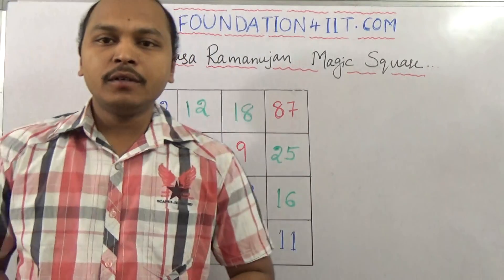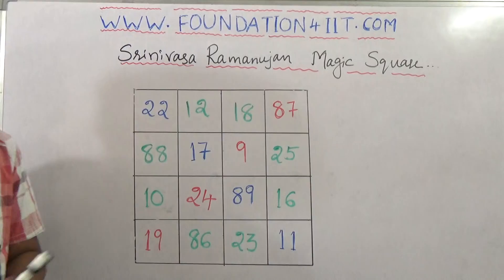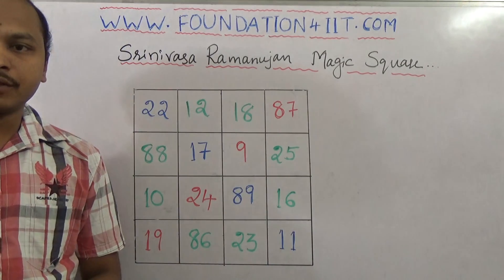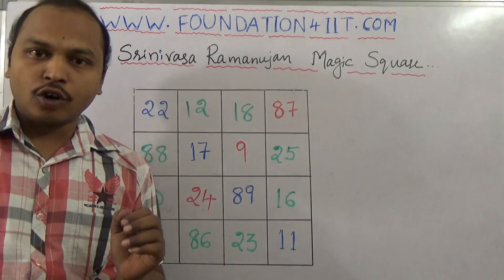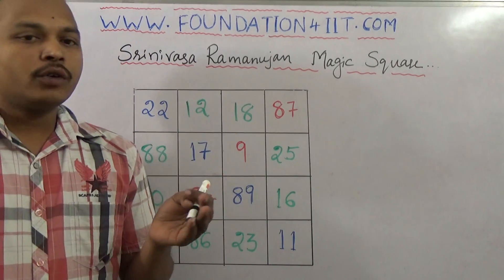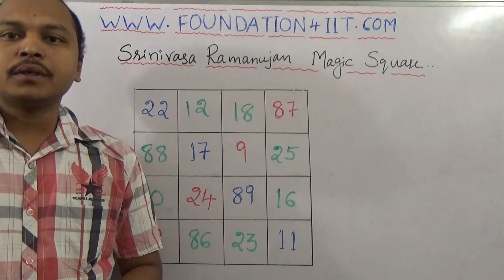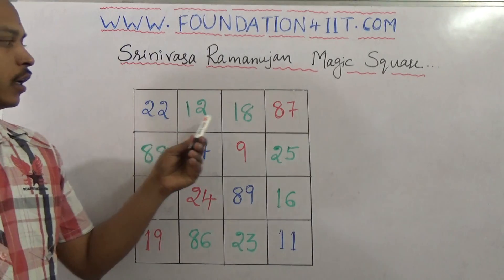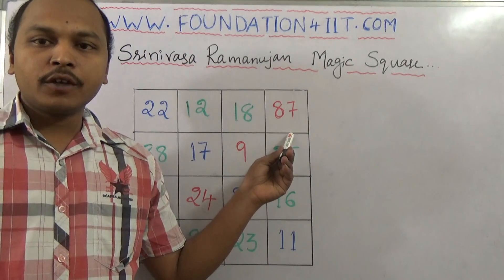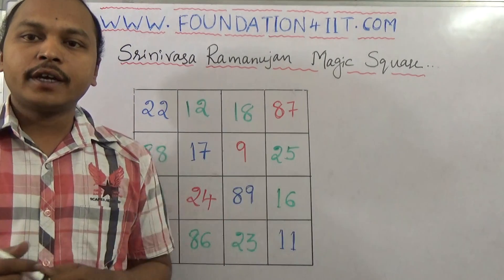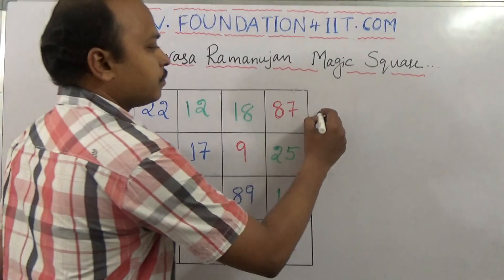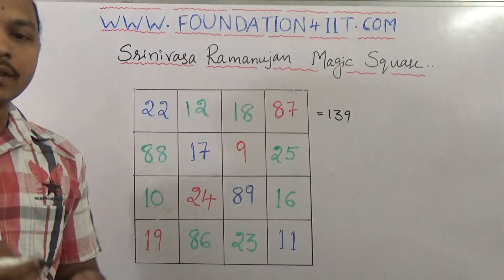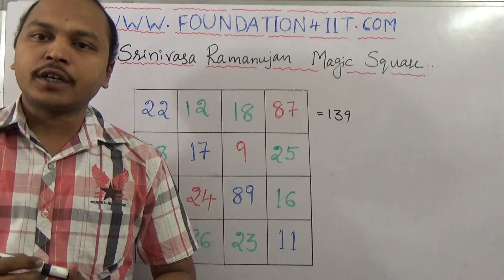If you observe this table, this is a 4 by 4 — 4 rows and 4 columns. In every row and every column I kept some numbers. If you observe carefully, in every row, if you add the numbers you will get 139. The total sum of every row is 139.